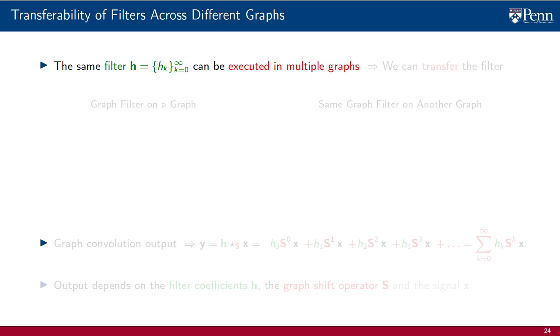A separate important property of graph convolutions is that the same filter can be executed in multiple different graphs. This is true because the graph filter and the shift operator are separated from each other in the definition of the filter. They have to be designed jointly, of course, but the coefficients h_k do not depend on the shift S afterwards. We say that we can transfer the filter across graphs.